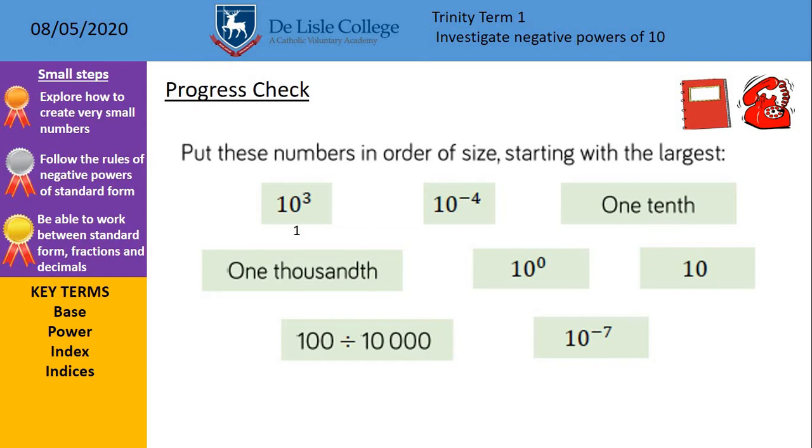So start with the largest, obviously is 10 to the power of 3, we've got 1000. Next up is just 10 on its own. 10 to the power of 0 would be 1. 1 tenth, if we're going with decimals, 0.1. 100 divided by 10,000, we've got 0.01. 1 thousandth, 0.001, and then 0.0001. And the last one, I'm not going to go through all the zeros, but we should recognise that, as it's got the largest negative figure, that's going to be the one that's the smallest number by far there.